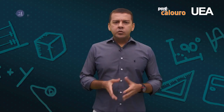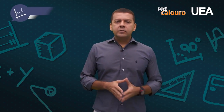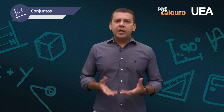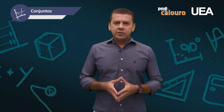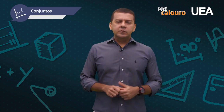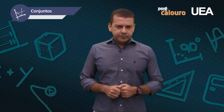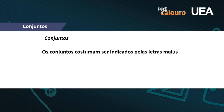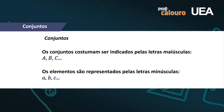Os conjuntos numéricos são representados por letras maiúsculas do alfabeto — Conjunto A, B, C — e os seus elementos são representados por letras minúsculas — a, b, c.